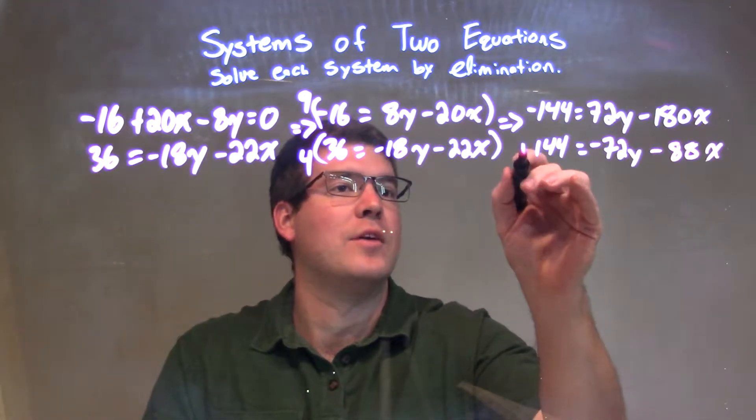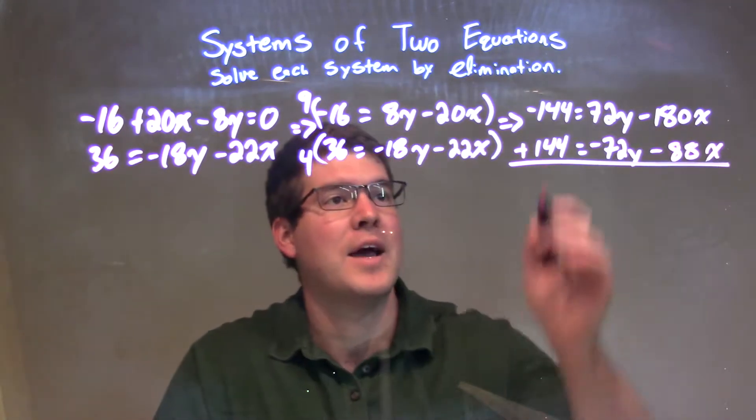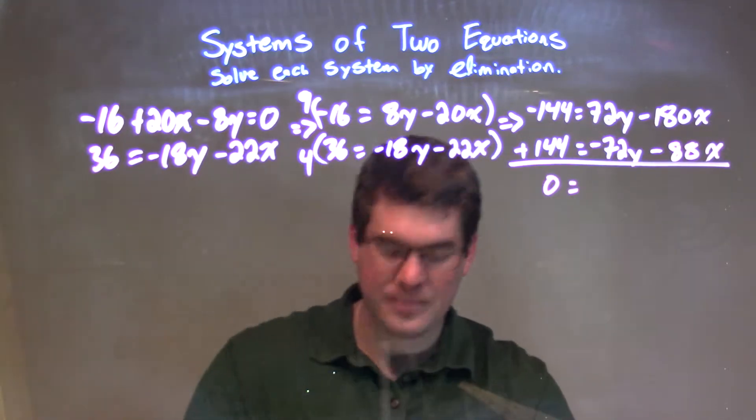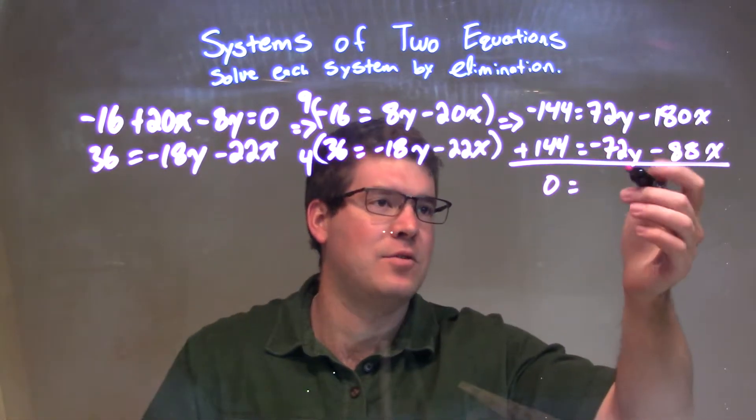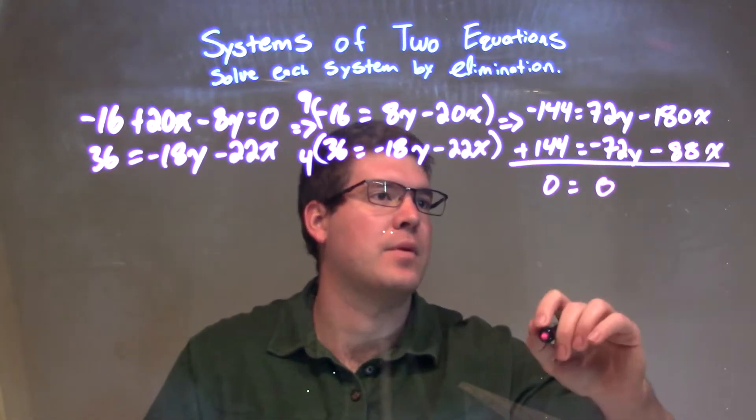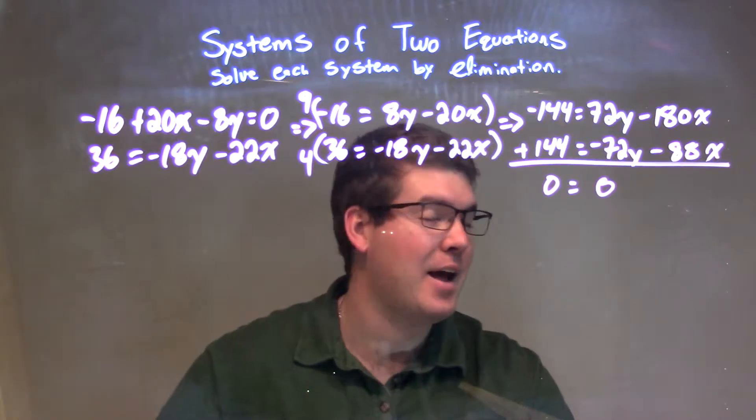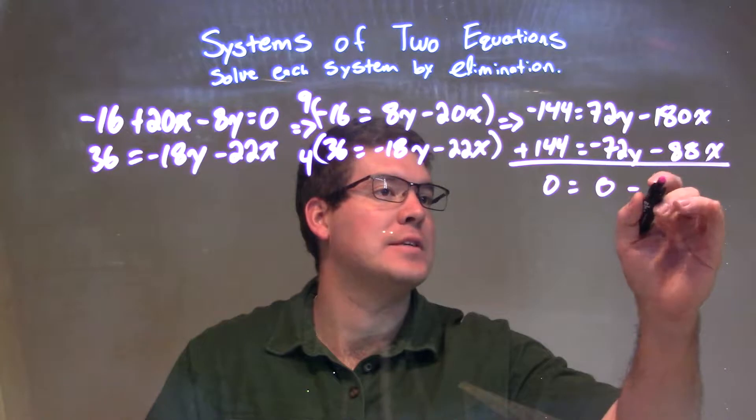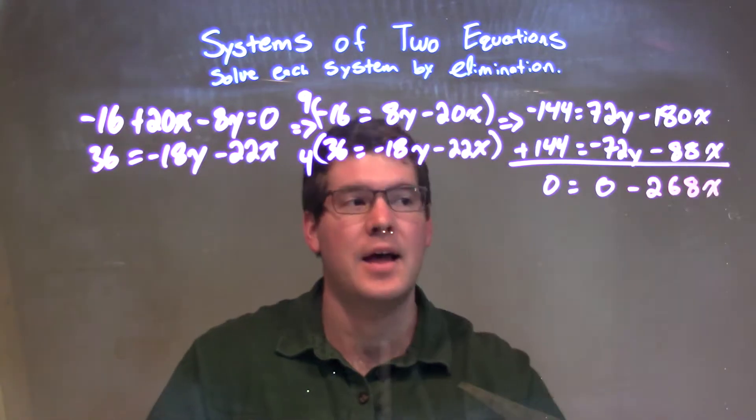So, now we have to add our two equations here. And this is a little tricky here, be careful. We have negative 144 plus positive 144, and we have a 0. 72y minus 72y is just 0. Negative 180x minus 88x is going to be minus 268x.